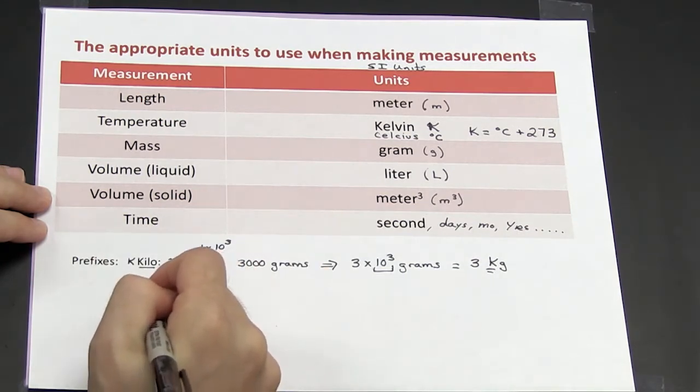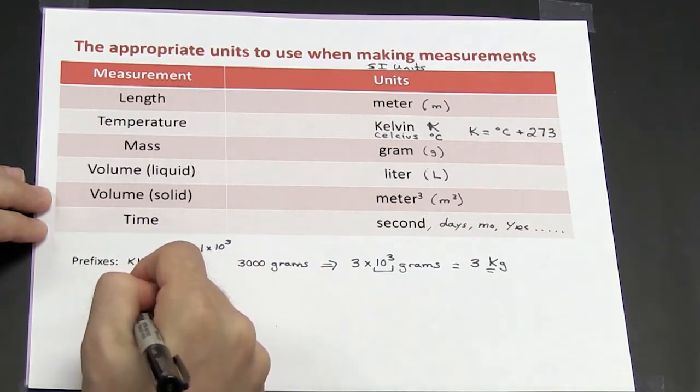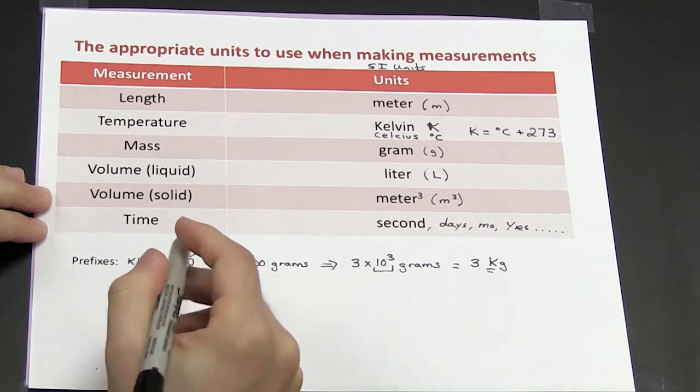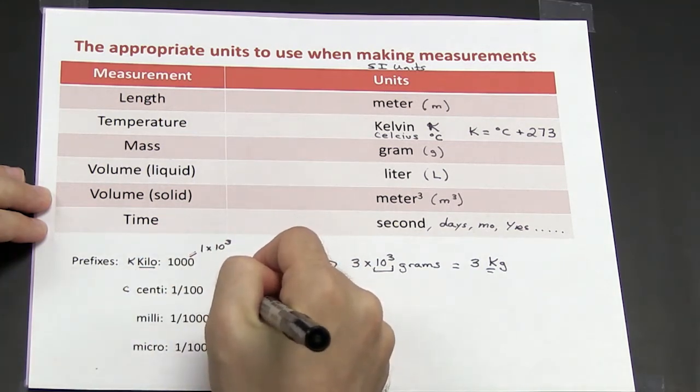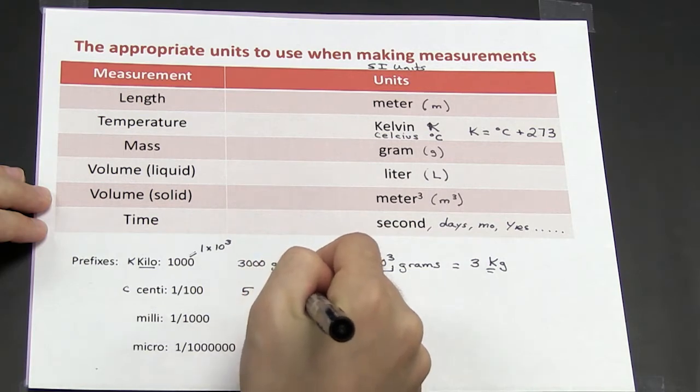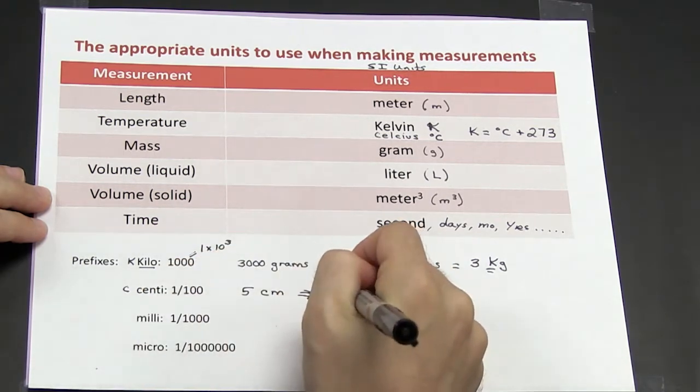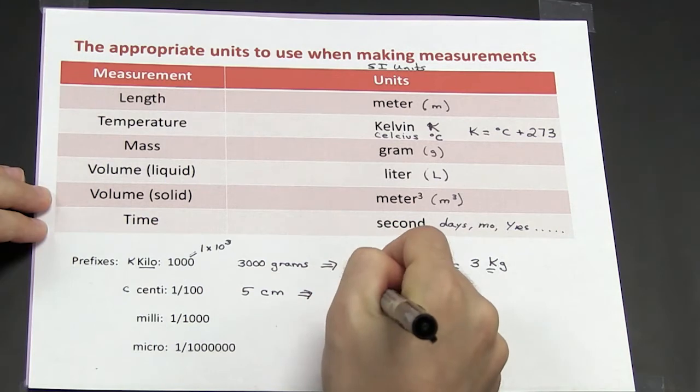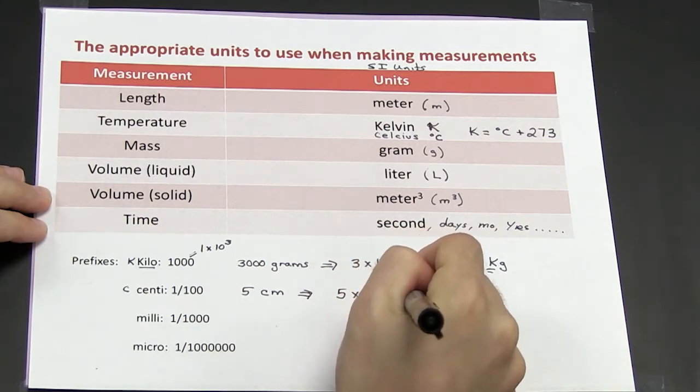1 over 100th, the prefix is centi, and that's with a little c. So for example, if I have 5 centimeters, that is the same thing as 5 times 10 to the minus 2 meters. 1 over 100th is the same thing as 1 times 10 to the minus 2.